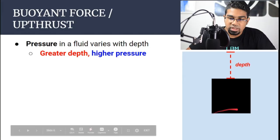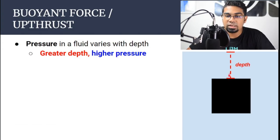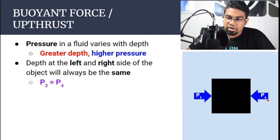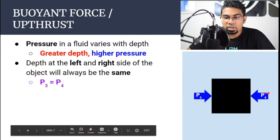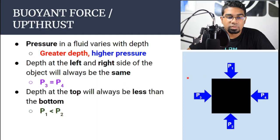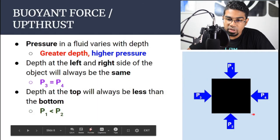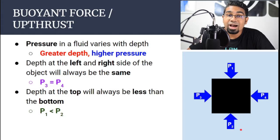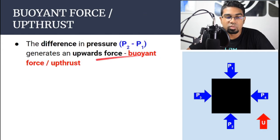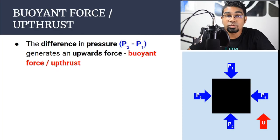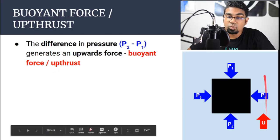Depth is the distance from the surface. Looking at this object, pressure is measured from the surface down. On the left and right at the same level, the pressure is always equal — P3 always equals P4. But vertically, the bottom is deeper than the top, so pressure at the bottom is higher than at the top: P2 is greater than P1. This difference in pressure generates the upward buoyant force. When we multiply pressure by area, we get the buoyant force, which always acts upwards toward the surface of the liquid.